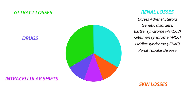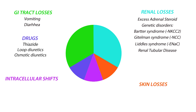GI tract losses are due primarily to vomiting and diarrhea, which lead to decreased absorption. Drugs like thiazide, loop, and osmotic diuretics are known to reduce potassium reabsorption by the kidneys by blocking the transporters involved in potassium reabsorption, while drugs like penicillin enhance potassium secretion by creating a lumen-negative potential.